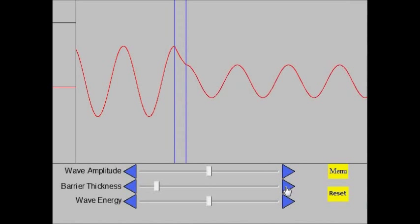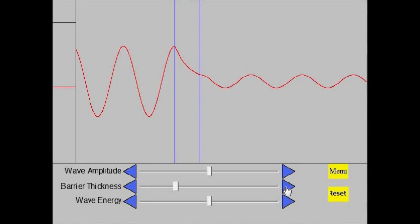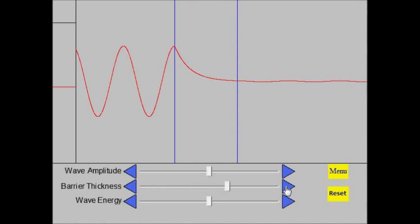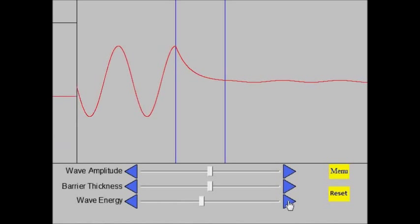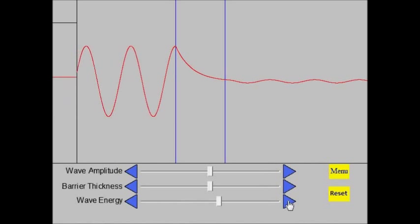As the wave energy increases, the wavelength decreases, and the amplitude of the wave on the opposite side of the barrier increases.